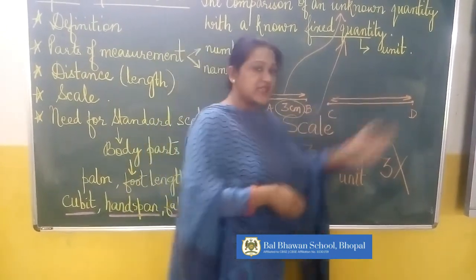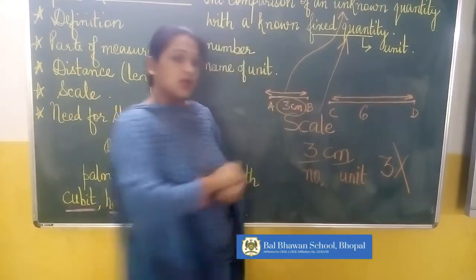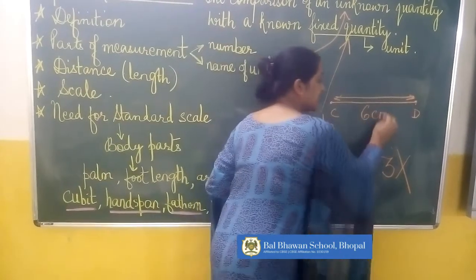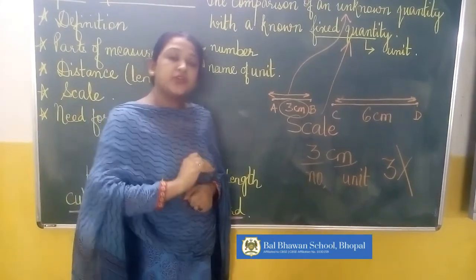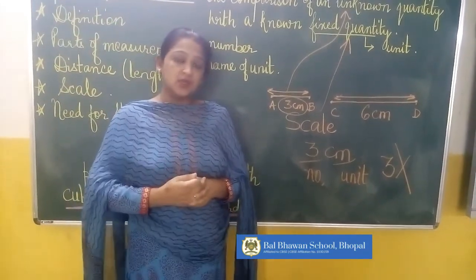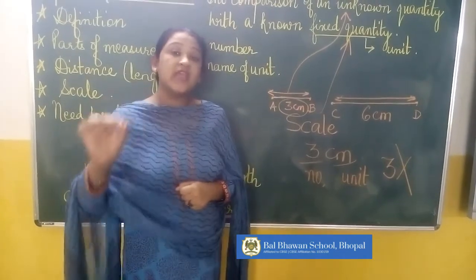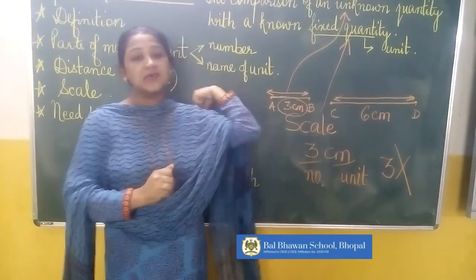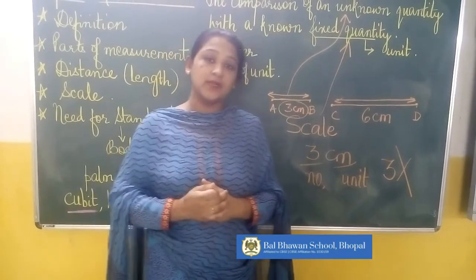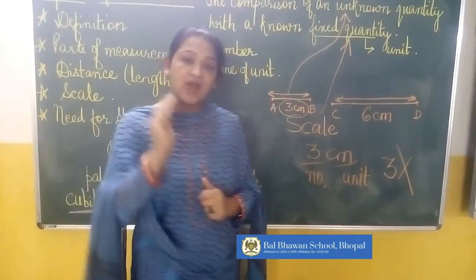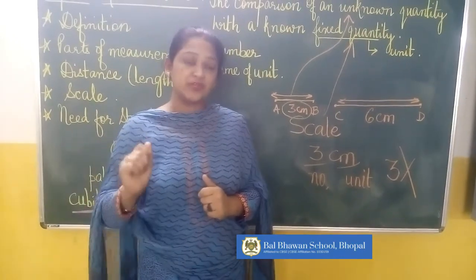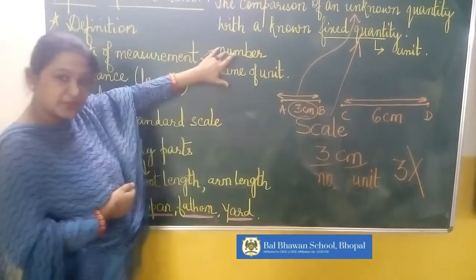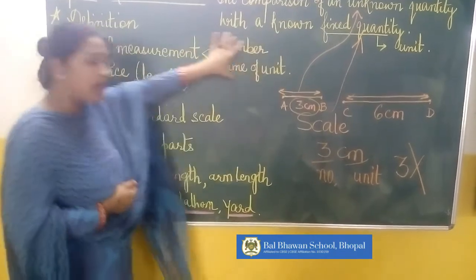Suppose the length of a line segment is 6 — am I correct? No, because I have not written the unit. So I will say it is 6 cm. When you buy apples, you say 'I want 2 kg apples' — 2 is the number, kg is the unit. When your father brings edible oil home, it is 5 litres — 5 is the number, litres is the unit. So now you all know what is measurement and what are the parts of measurement.